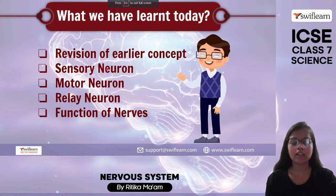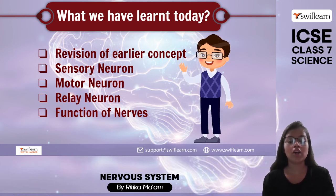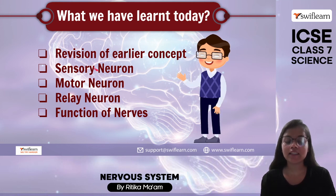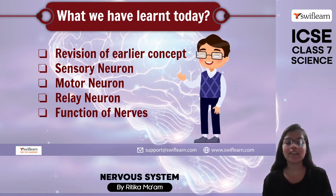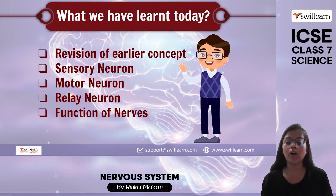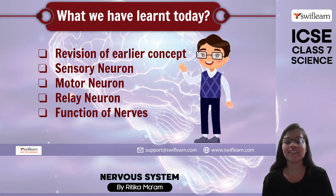To summarize what we have learned today: we had a revision of earlier concepts, we learned about the three types of neurons — sensory, motor, and relay — and we studied about the three types of nerves: sensory, motor, and mixed. I hope you understood everything; it was a very simple and easy chapter. If you missed the first part, you can go to the Swift Learn channel where the videos are listed. We will continue this chapter further in the next class. Till then, keep studying, keep learning, and book your free trial class at Swift Learn. Thank you!